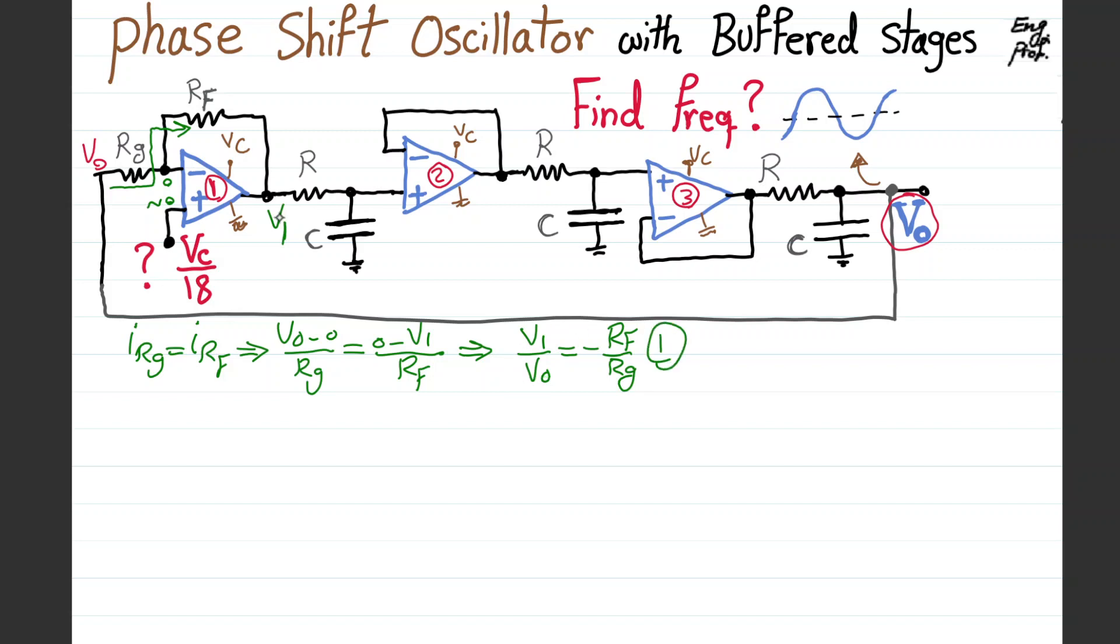Equation number two: from V1 we get to V2 at the output of this RC setup. It's an RC voltage division, a low pass passive filter. V2 over V1 is equal to the impedance of cap, one over jC omega, divided by R plus one over jC omega, which becomes one over one plus jRC omega. That's equation number two.